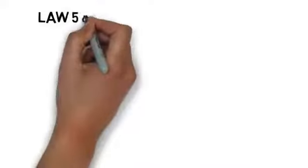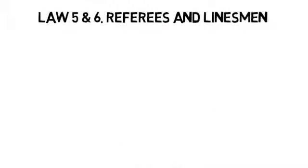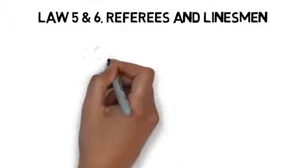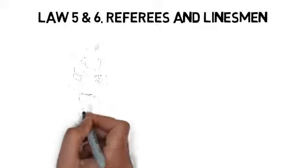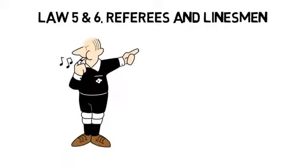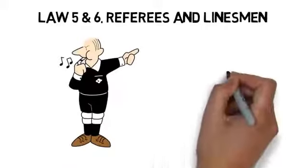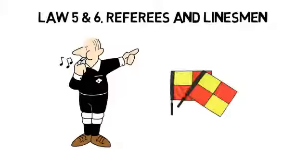Laws 5 and 6: referees and linesmen. In an official game, the referee makes the calls and controls time of the game. Linesmen or lineswomen decide who last kicked the ball out of the sidelines or end lines, and call offsides.